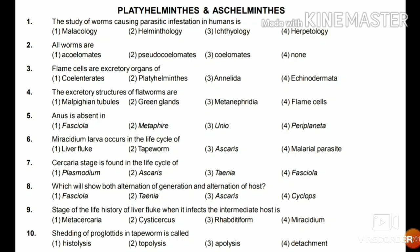Question 5: Anus is absent in Fasciola, Metafir, Uniobe, or Periplaneta? Anus is absent in Fasciola. Question 6: Miracidium larva occurs in the life cycle of liver fluke, tapeworm, Ascaris, or malarial parasite? Miracidium larva is present in the life cycle of liver fluke or Fasciola hepatica.